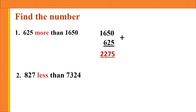Second question: 827 less than 7324. Less than means you have to subtract. Subtract 827 from 7324. First write the greater number, that is 7324. Then write 827 under the correct place, put the minus sign, and start subtracting from the right side. You will get the answer 6497.